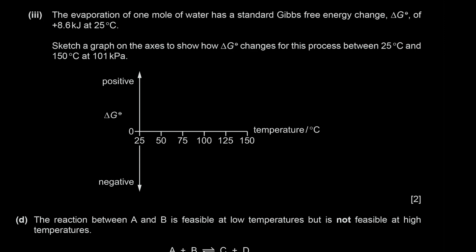The evaporation of one mole of water has ΔG = +8.6 kJ at 25°C. Sketch ΔG vs temperature from 25°C to 150°C at 101 kPa. At 100°C, ΔG = 0 (boiling point — process becomes feasible). Above 100°C, ΔG is negative. Below 100°C, ΔG is positive. Draw a straight line passing through zero at 100°C.